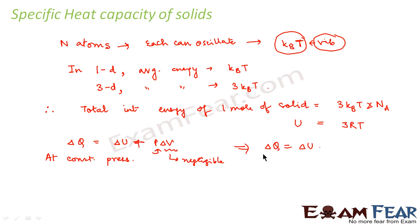We can consider the change in volume as zero. So this term becomes zero and we get delta Q is equal to delta U. From definition of cv and cp, cv is du by dt at constant volume, and cp is dq by dt at constant pressure. Since delta U and delta Q are same, this implies that cv is equal to cp.